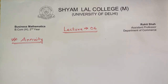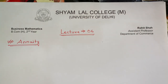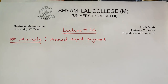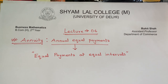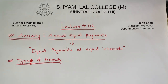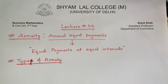Hello students, I am Rohit Shah, assistant professor at Shamlal College, back with a sixth lecture in Mathematics of Finance. The topic we would be discussing today is annuity. The meaning of the term annuity as per dictionary is annual equal payments, but in mathematics of finance we broaden it to equal payments at equal intervals. Intervals here can be yearly, monthly, quarterly, half-yearly or semi-annually. There are various types of annuities, but for the content of our syllabus we will limit ourselves to only six types.